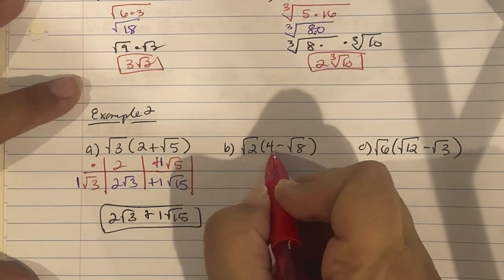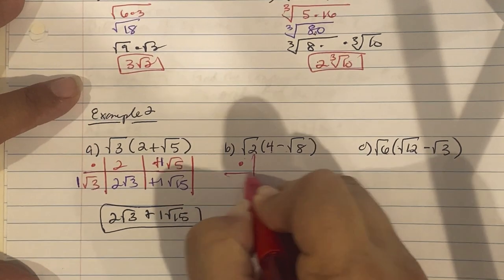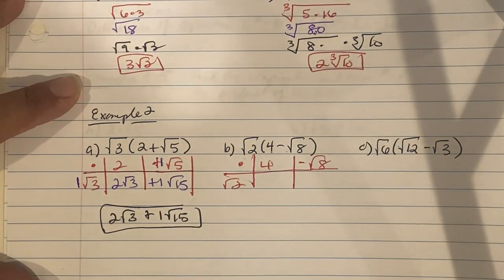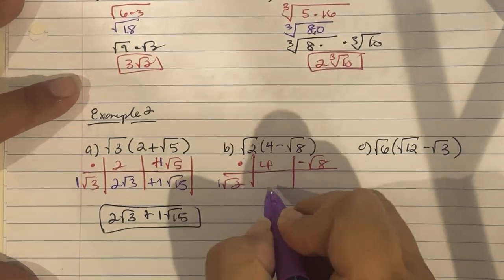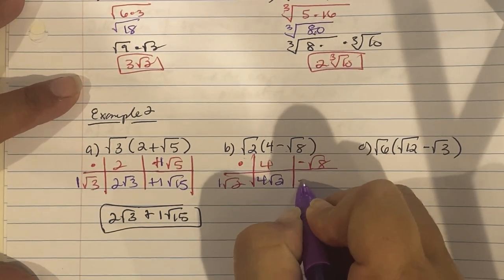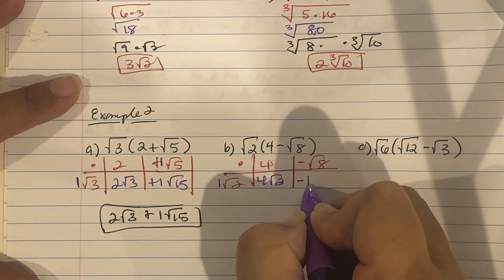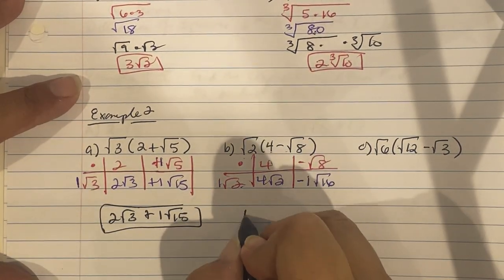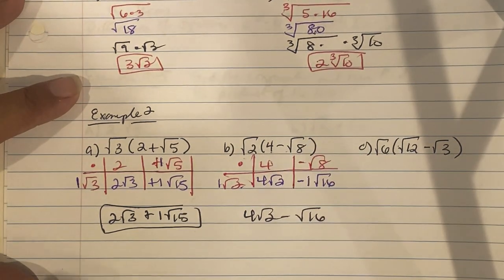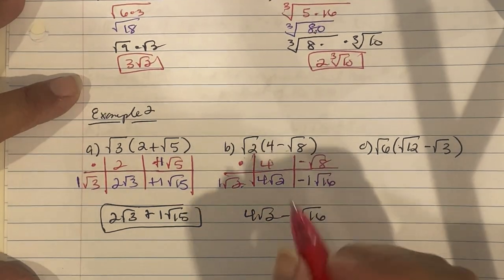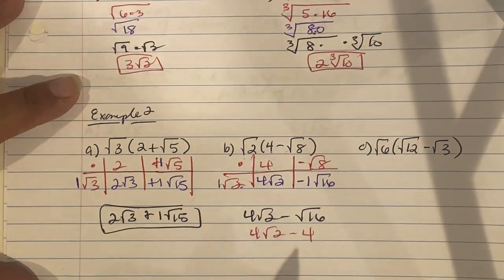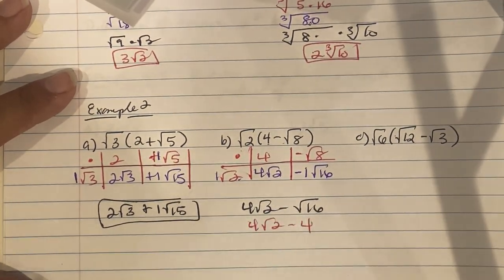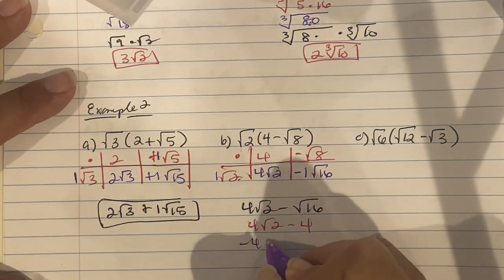Next: square root of 2 times (4 minus square root of 8). Using the box: square root of 2 outside, 4 and negative square root of 8 inside. 1 times 4 gives 4 with radical 2; negative 1 times negative 1 is negative 1, and radical 2 times 8 is square root of 16. So we have 4 square root of 2 minus square root of 16. Since square root of 16 equals 4, the answer, rewritten with the whole number first, is negative 4 plus 4 square root of 2.